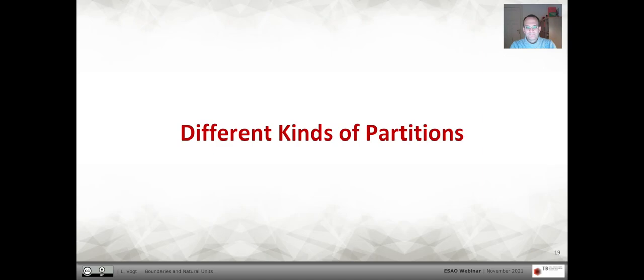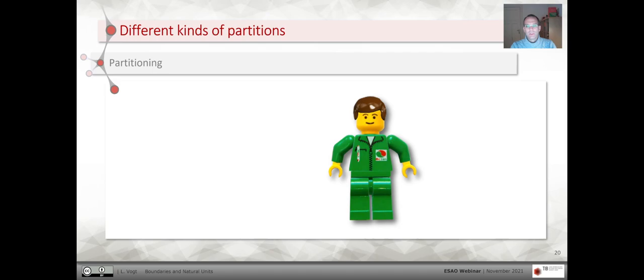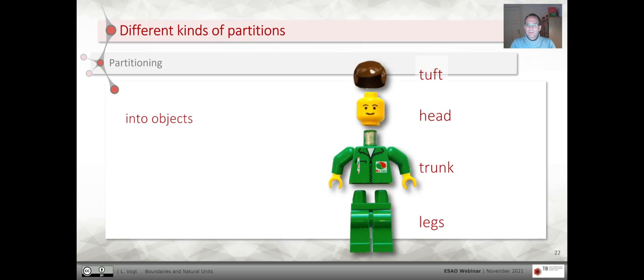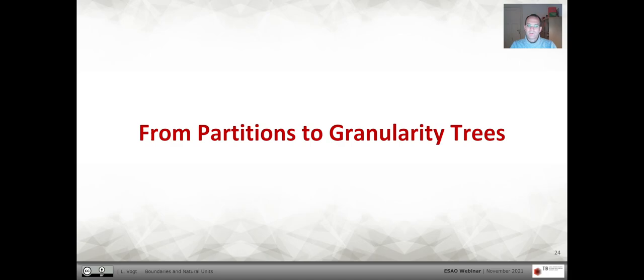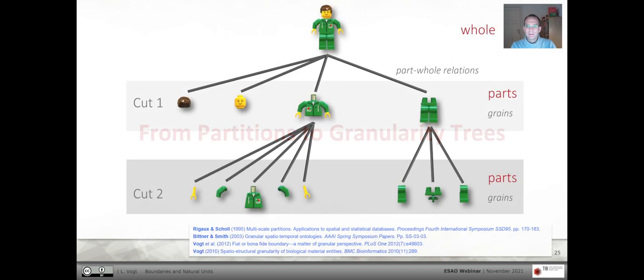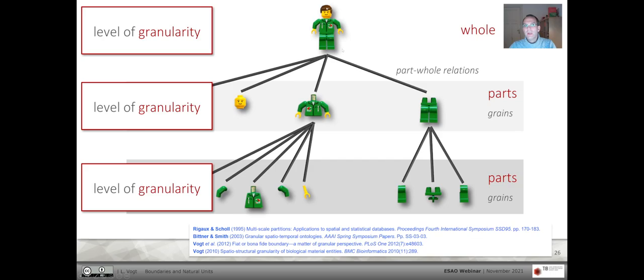There are different kinds of partitions we can distinguish. For instance, here we have Alma, and we can distinguish the head, trunk, and legs — we partition Alma into different regions. But we could also partition Alma into different objects: the tuft, head, trunk, and legs. And these parts can have finer-grained parts, so partitioning can result in what we call granularity trees. Alma is the whole, then we have the first cut of parts called grains, and some of these grains have further grains in cut number two. The relation between levels is a part-whole relation, and we can distinguish three levels of granularity — that's an instance granularity tree.